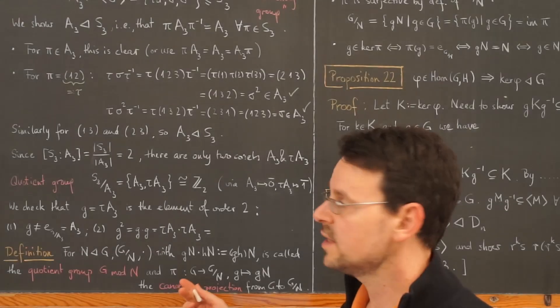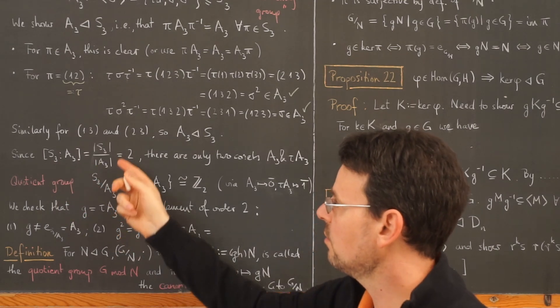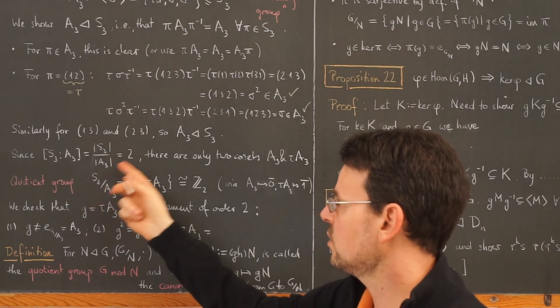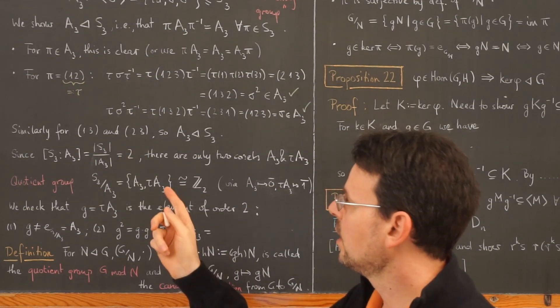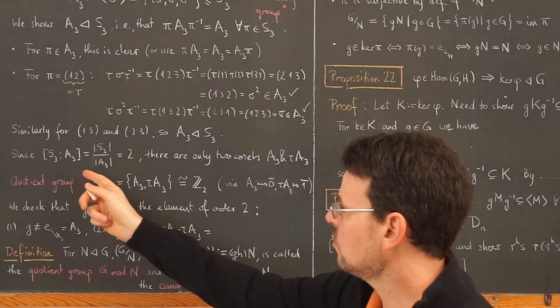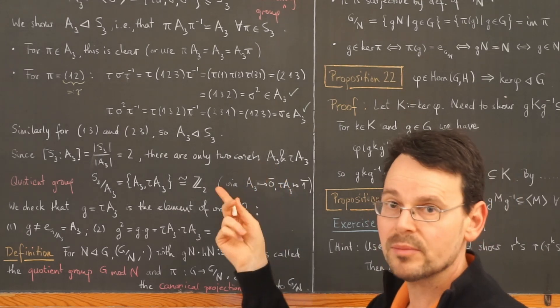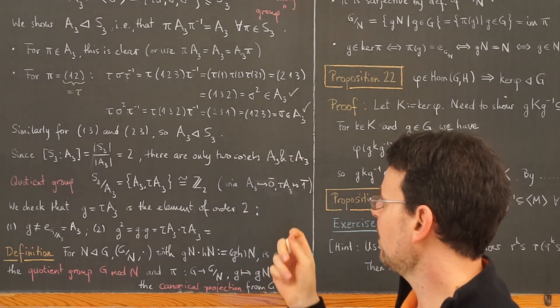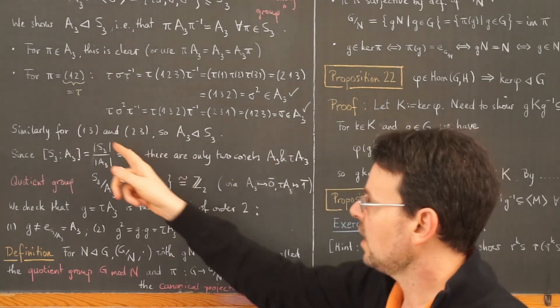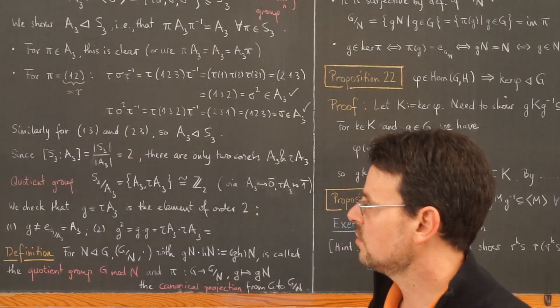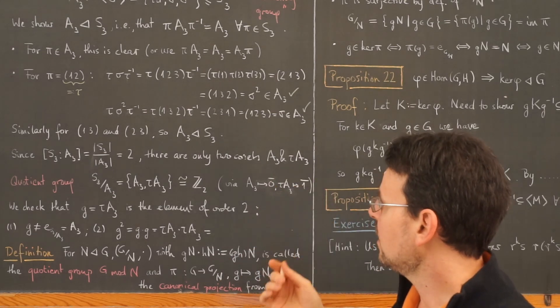Okay, now what is the index of A3 in S3 by Lagrange's theorem? This is this quotient which of course is 2. This here is 6 divided by 3, so the index here is 2, which means there are only two different cosets: namely the subgroup A3 itself and the left coset tau A3 with this tau. Or we could have taken this one or this one here, it doesn't matter, it always yields the same non-identical coset.